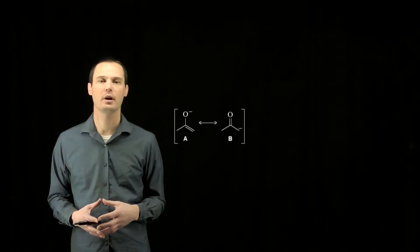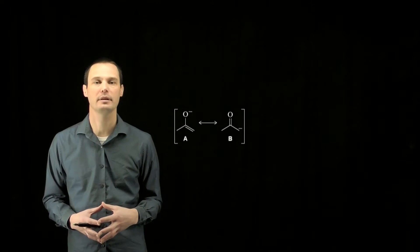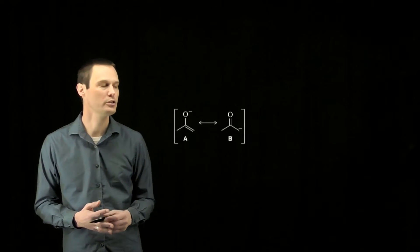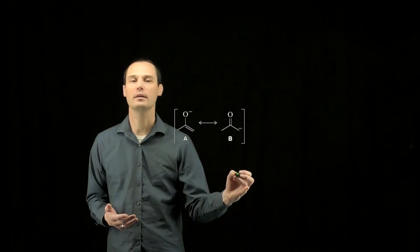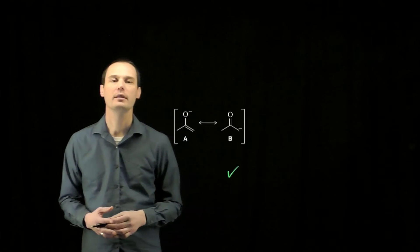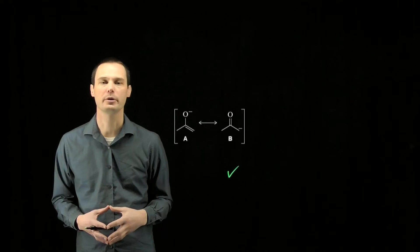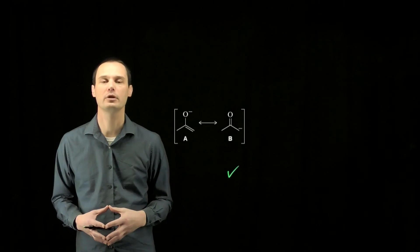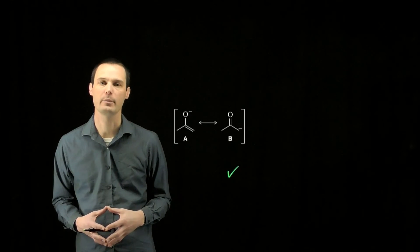Oxygen is more electronegative than carbon, so it can better handle that excess electron density and the negative charge. That makes the version with the negative charge on oxygen the more stable resonance contributor, and therefore it contributes more greatly to the overall resonance hybrid.